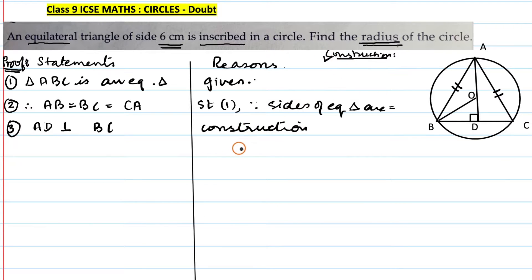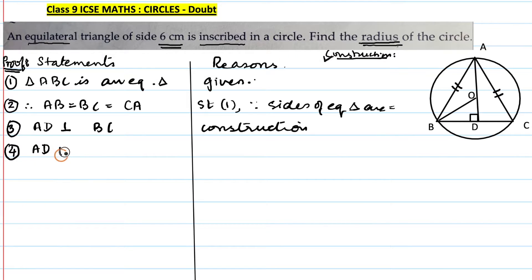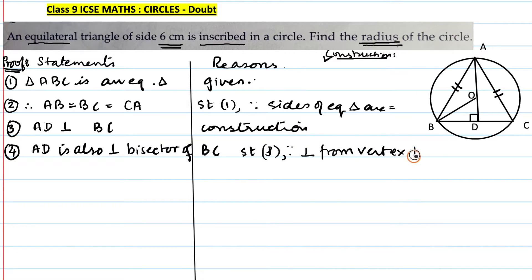Statement 4: since AD is the perpendicular altitude in an equilateral triangle, it is also a median, so D becomes the midpoint of BC. The perpendicular at the midpoint passes through centre O, making AD the perpendicular bisector of BC. Since BC is a chord of the circle, AD is also the perpendicular bisector of BC.